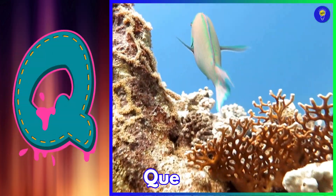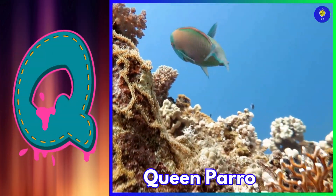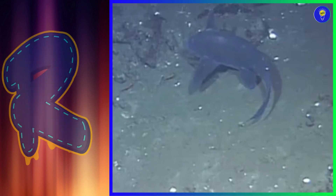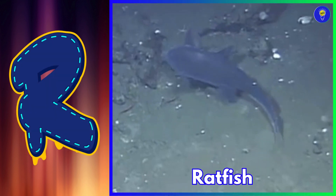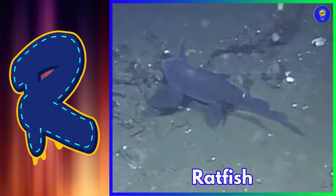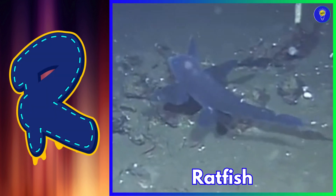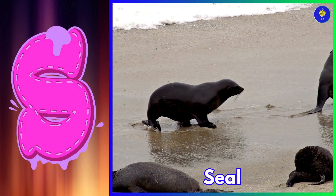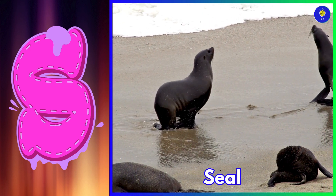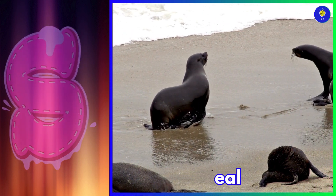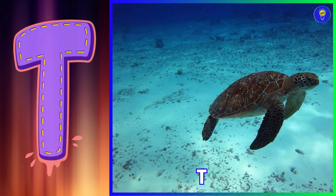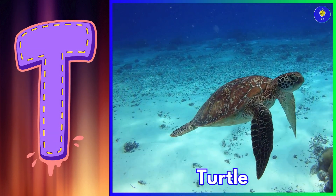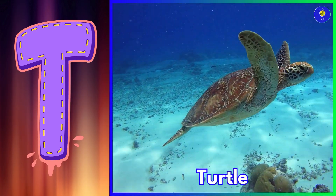Q is for queen parrotfish. R is for ratfish. S is for seal. T is for turtle.